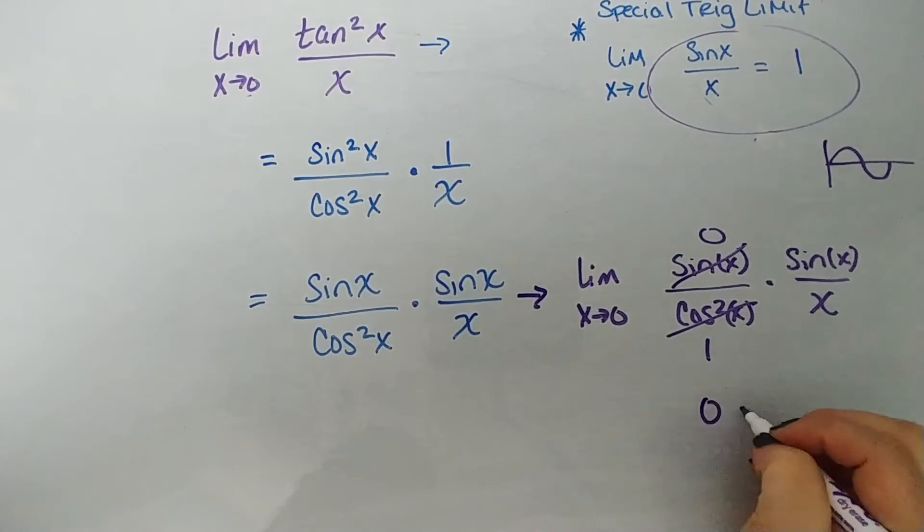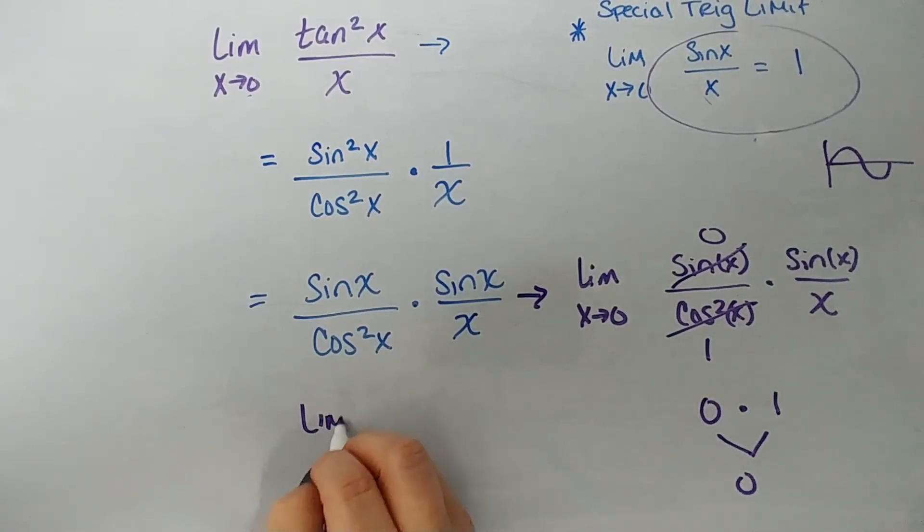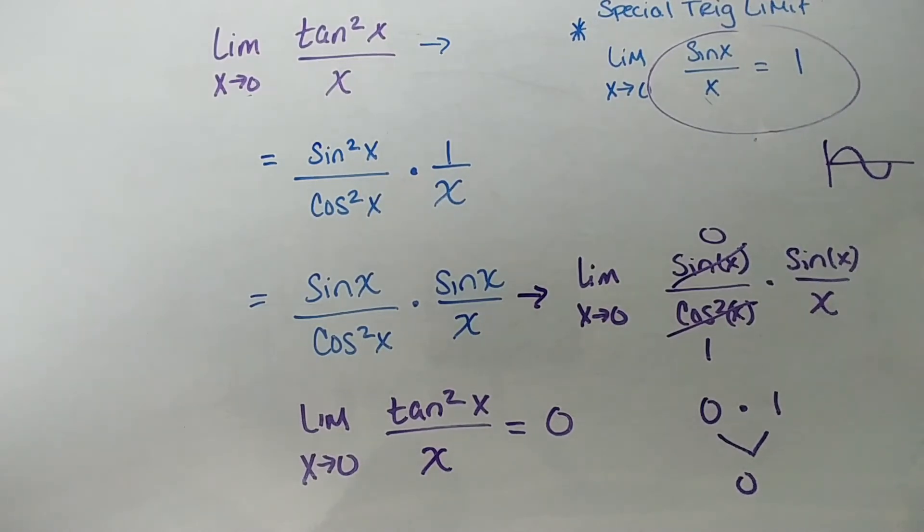So this is 0 times 1, which is 0. So we can safely say the limit as x approaches 0 of tangent squared of x over x equals 0. Kind of anticlimactic that we wound up just getting 0 for something that started out so interesting.